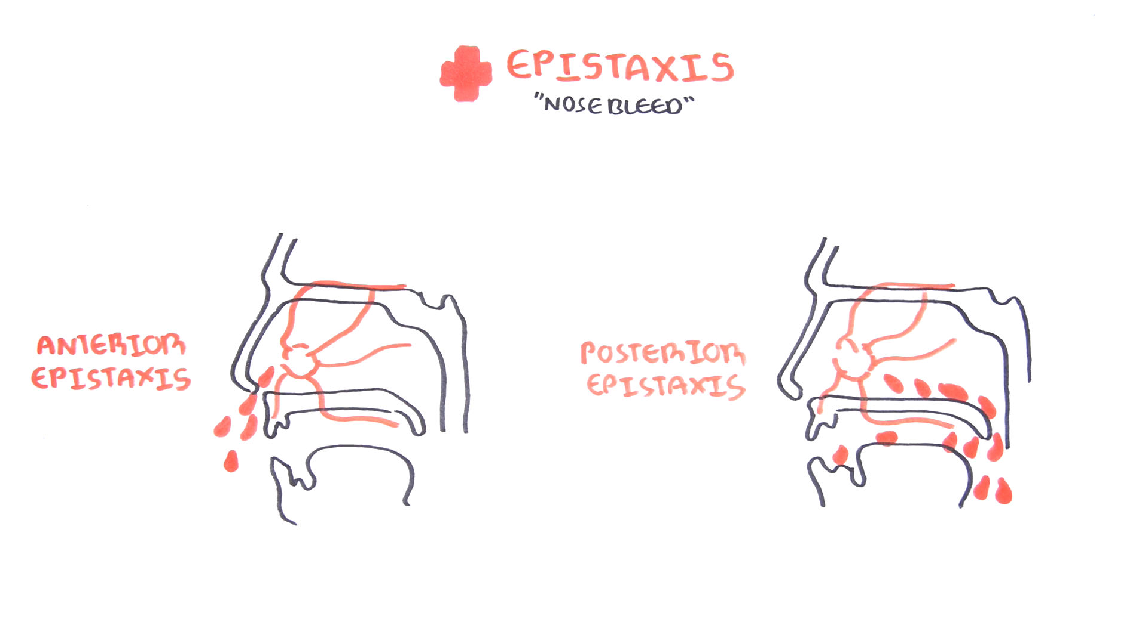Whereas posterior nosebleeds tend to be more aggressive and allow blood to run backwards down the throat. There is an increased risk of blood clotting which can run into the oral cavity, but also can go down towards the esophagus and cause aspiration if it moves towards the lungs.